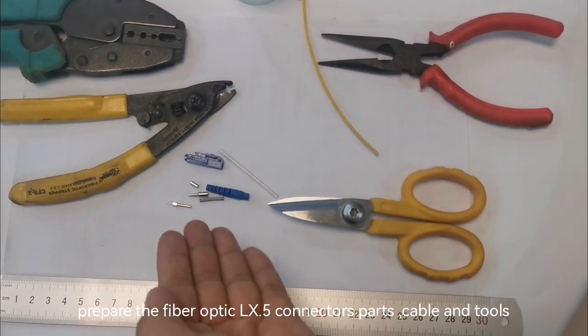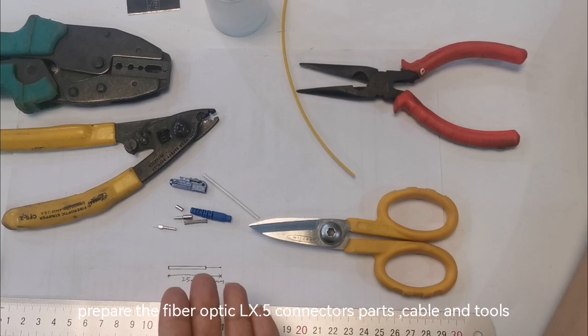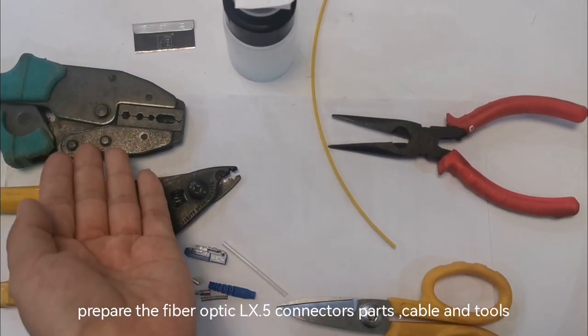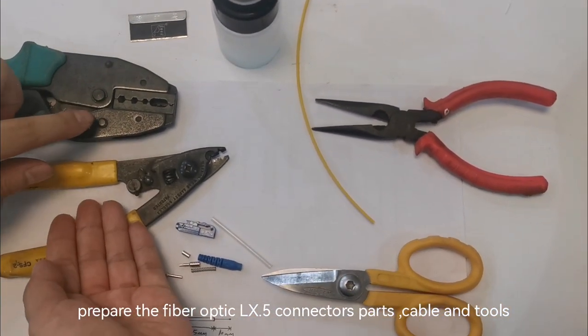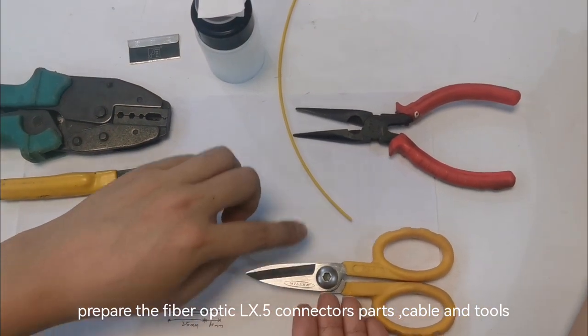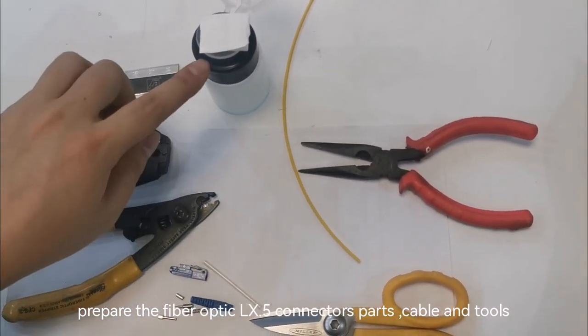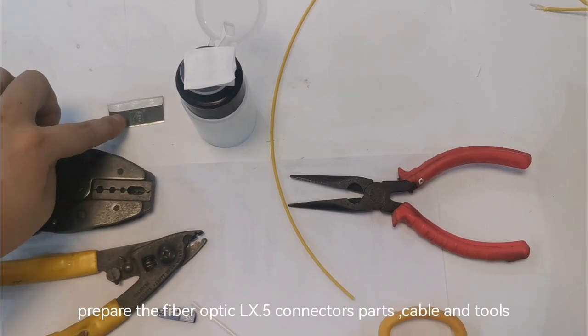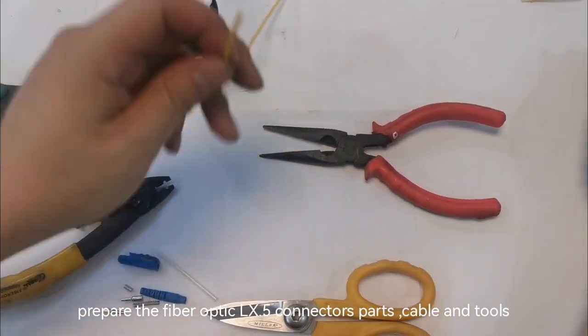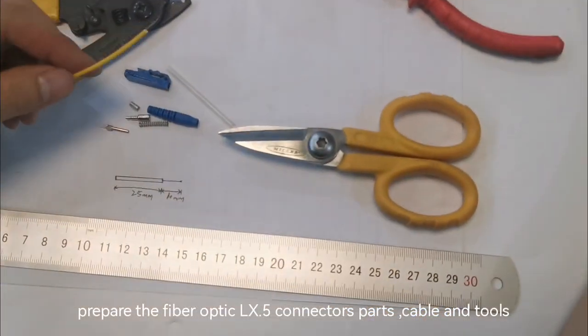LX.5 connector parts, stripping tool, crimping tool, kevlar scissors, pliers, alcohol bottle, knife, cable, and the ruler.